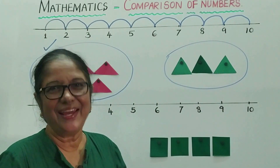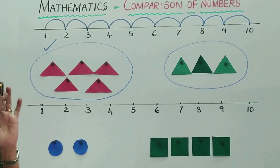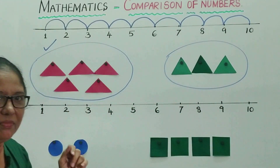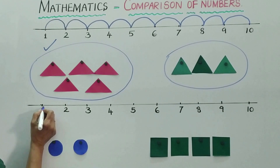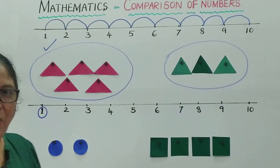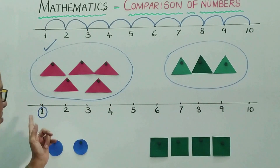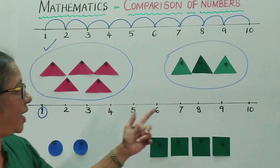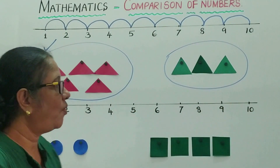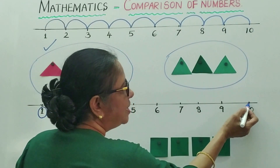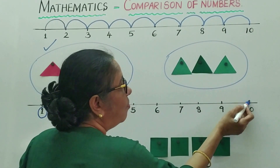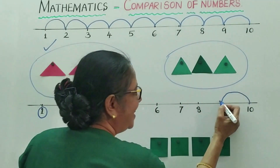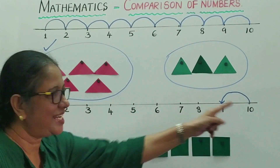Now I have written numbers from 1 to 10 again. Number 1 is the least over here. As the number goes up it increases. Number 10 is more than number 9, so 9 is less than 10.